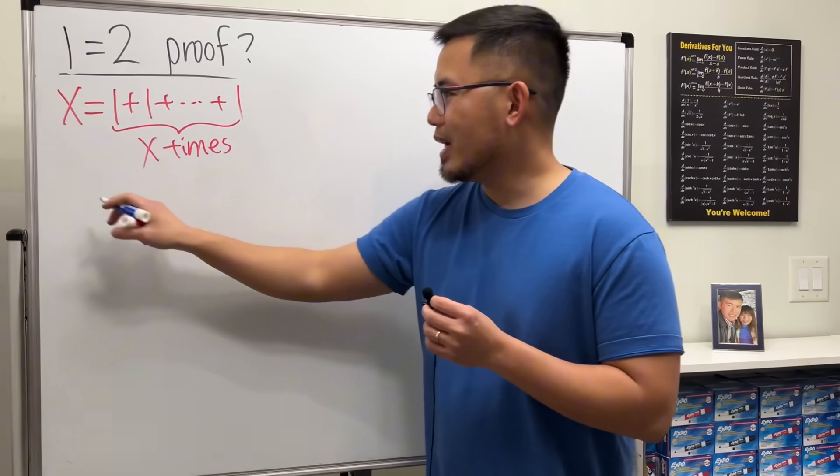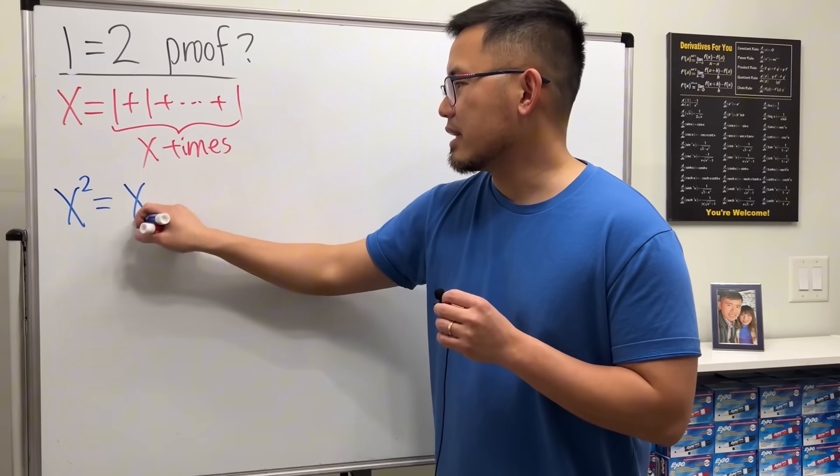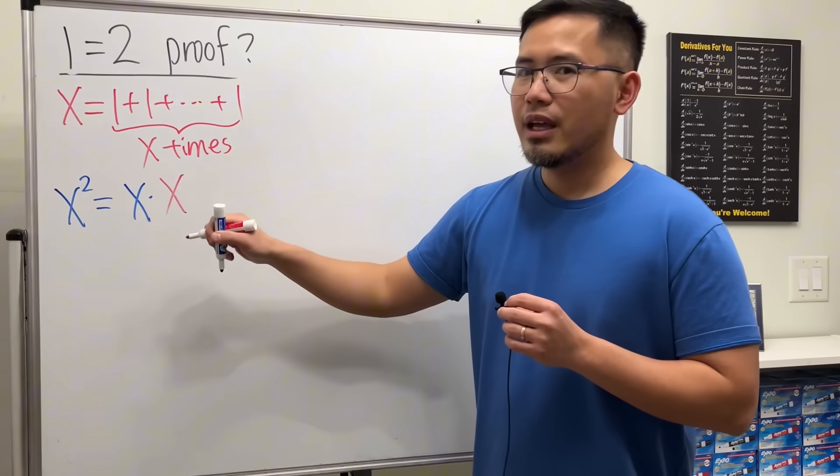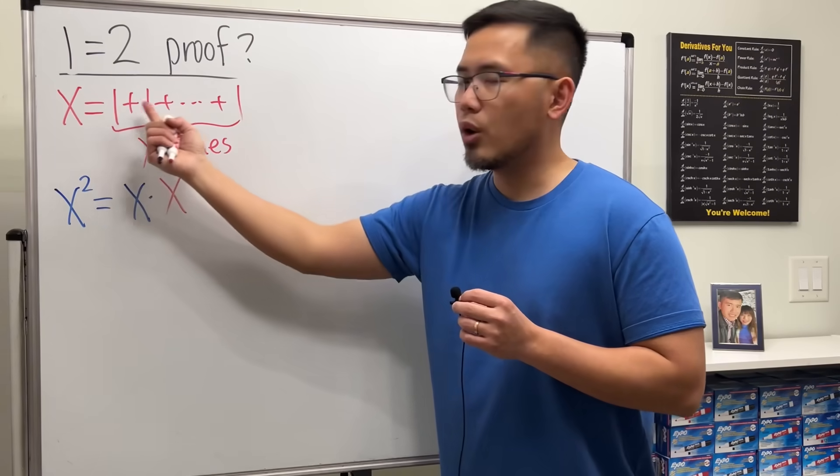All right, then we are going to take a look at X squared, which of course we know that's the same as X times X.